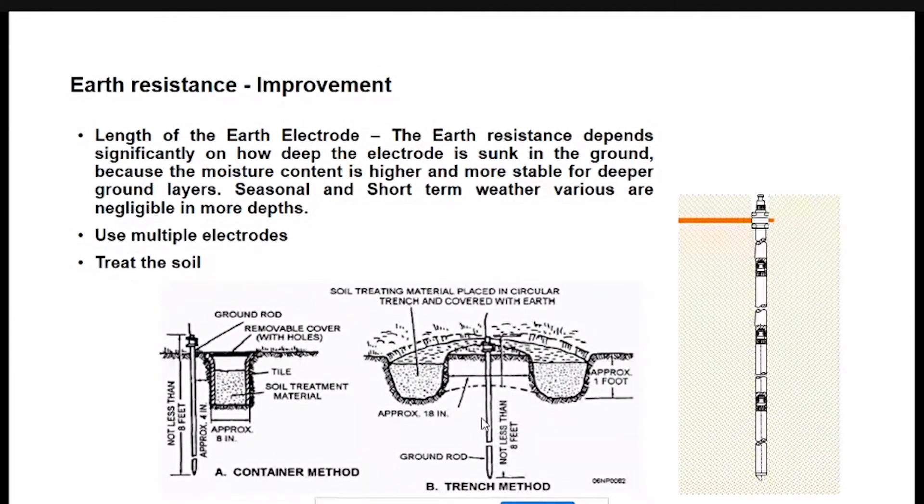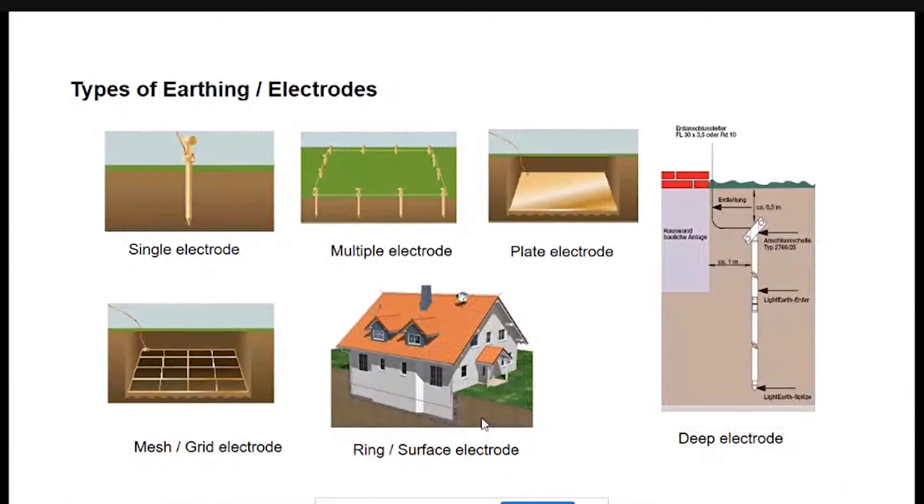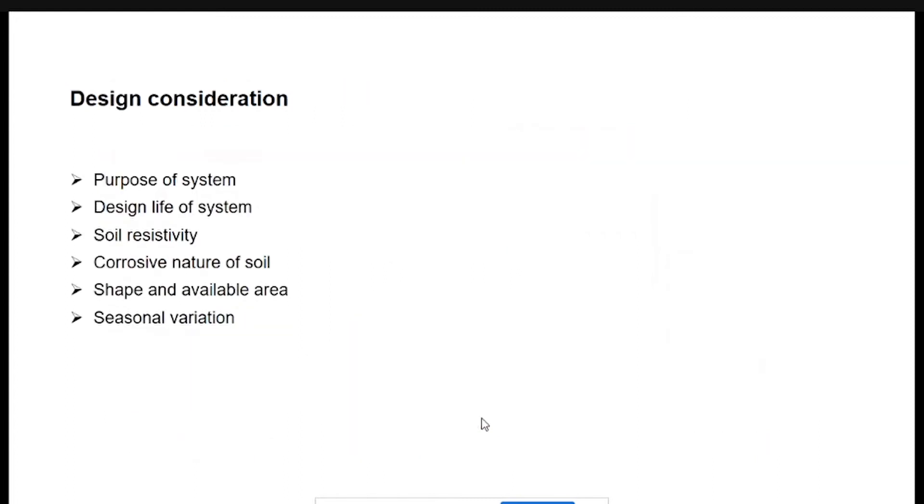There are different methods of earthing practiced, and the best method to get better resistance is the deep driven electrode method. If your resistance is important, then you have to drive the electrode deeply. But if your step and touch potential is important, then the design of earthing should be more of horizontal earth electrodes like plate electrode or mesh electrode.